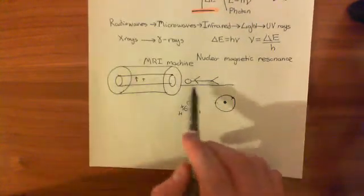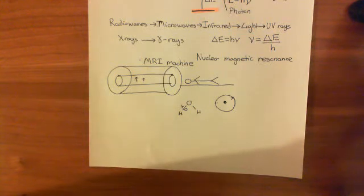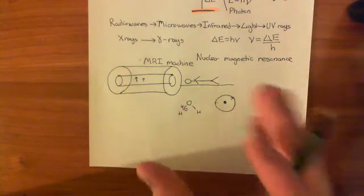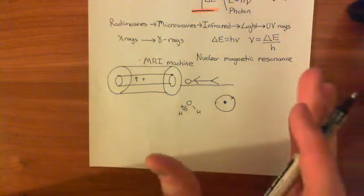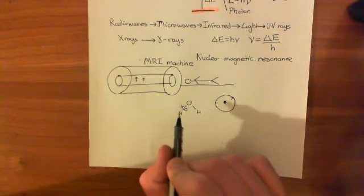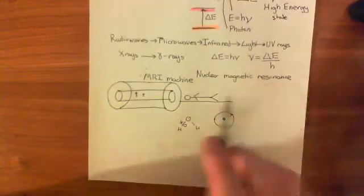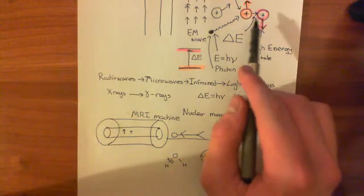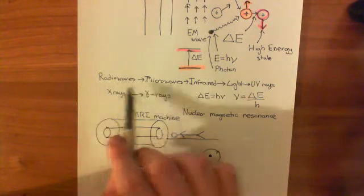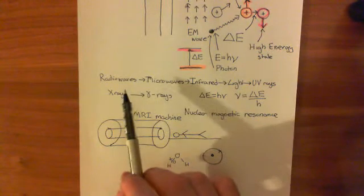You might ask: all the other atoms in this person, such as the oxygen atom, won't they also do nuclear magnetic resonance since they have protons? And they will, but the fact that the proton is in a much bigger nucleus with many other protons and neutrons makes the nuclear magnetic resonance they undergo very different. We can do it with hydrogen protons very easily, and it will work at much lower frequency radiation.